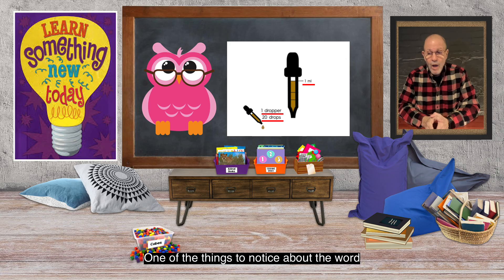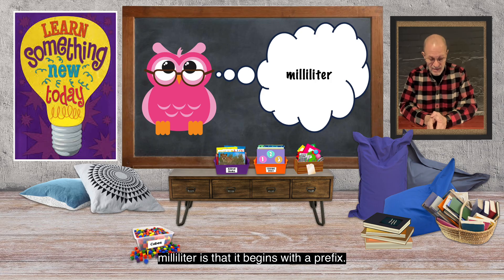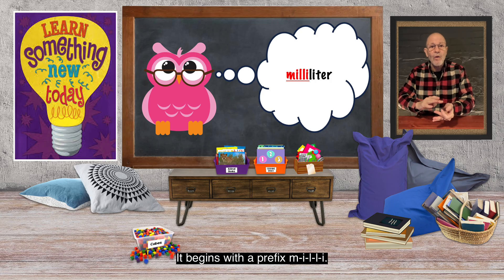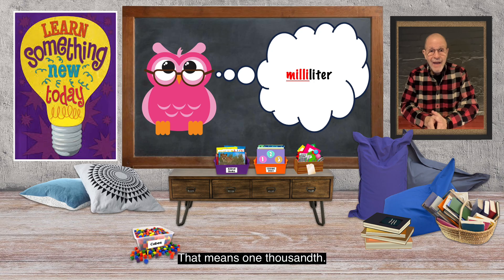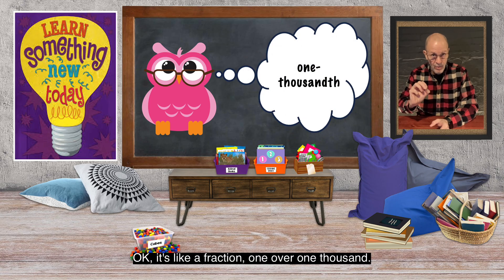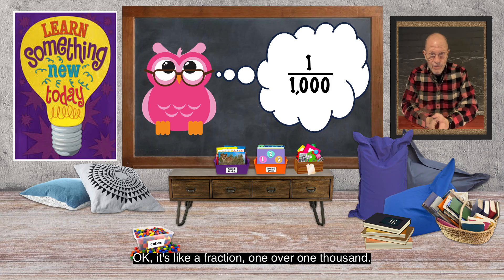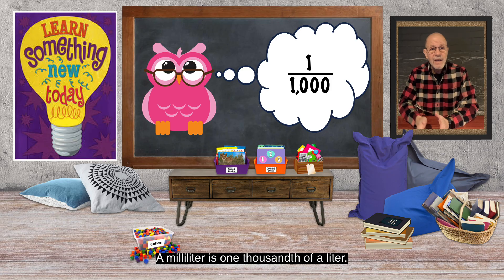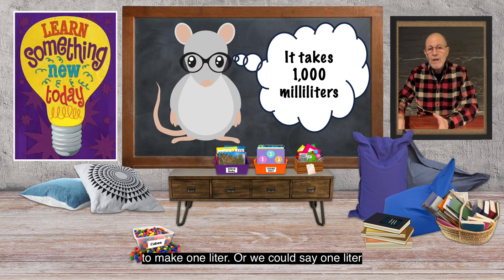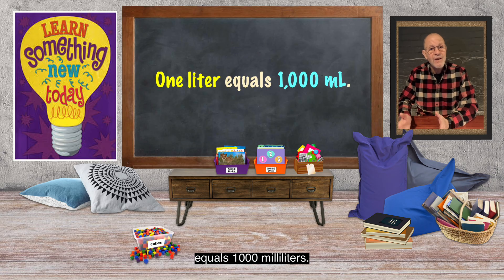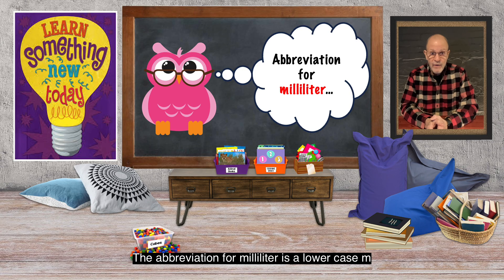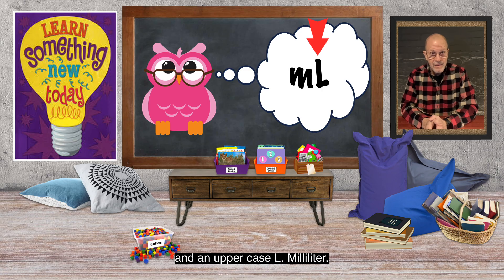One of the things to notice about the word milliliter is that it begins with a prefix — m-i-l-l-i — that means one thousandth. It's like a fraction: one over one thousand. A milliliter is one thousandth of a liter. It takes one thousand milliliters to make one liter, or we could say one liter equals one thousand milliliters. The abbreviation for milliliter is a lowercase m and an uppercase L — mL.